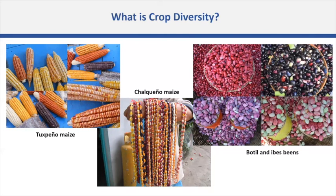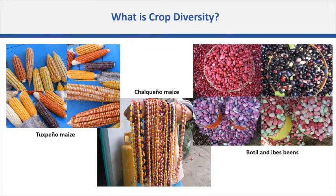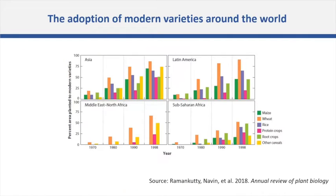Today I'll talk about crop diversity — the diversity that exists on farmers' fields and that constitutes our food. Crop diversity is not only the number of species that we eat, but also the diversity within the same variety — the genetic diversity inside a single population, like this Tuxpeño maize from Mexico, where you can find different colors and different shapes. The same applies to beans, where within the same variety we can have different colors and shapes.